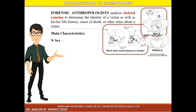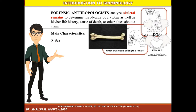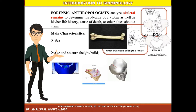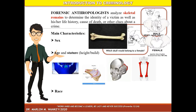In men, the diameter of the head of the femur is larger than 55 mm. In women, the diameter of the head of the femur is less than 45 mm. The second characteristic is age and stature — the height or build of the person's body structure. It is determined by analyzing the development of the teeth, bone growth, cranial suture lines, and the length of specific bones such as the femur.